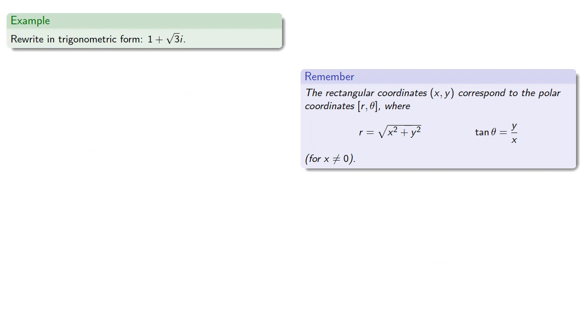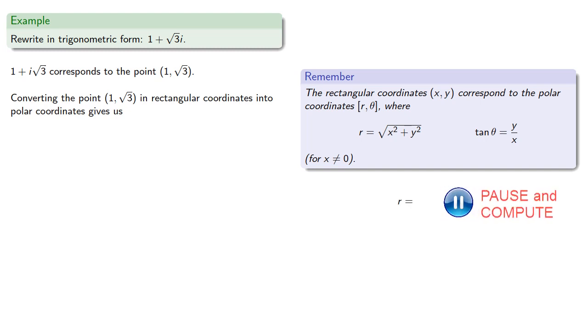As another example, let's try to rewrite in trigonometric form 1 plus square root 3 i. Again, the number in rectangular form corresponds to a point in rectangular coordinates. And converting our point in rectangular coordinates into polar coordinates gives us r equals 2.